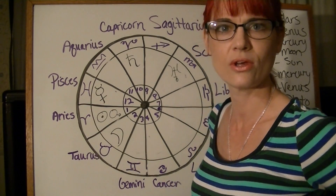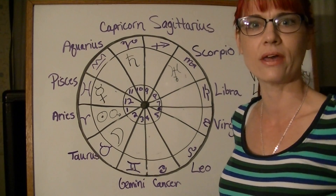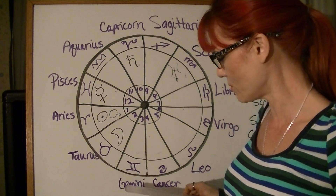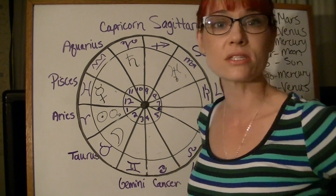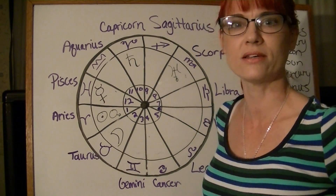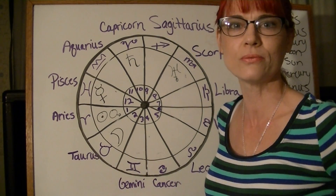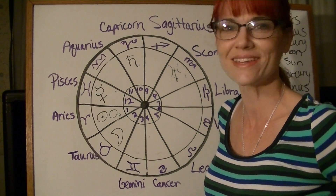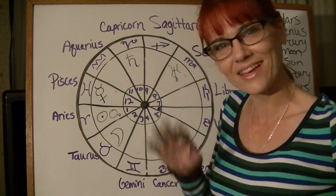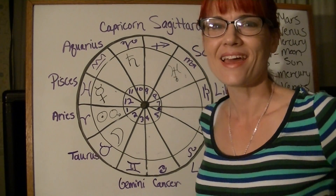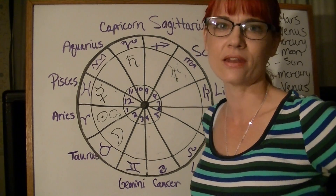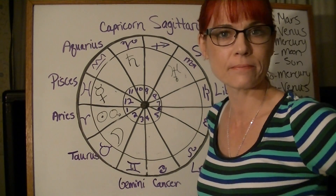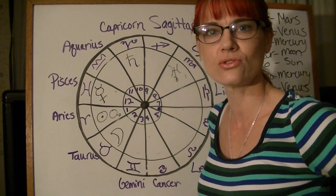And that is how we find house lords and house rulers — it's very simple! Please subscribe to my channel; I'll be putting out more new fun videos. Find me on Facebook and at Truth in Aspect Astrology on the internet. I'll see you soon — bye bye!